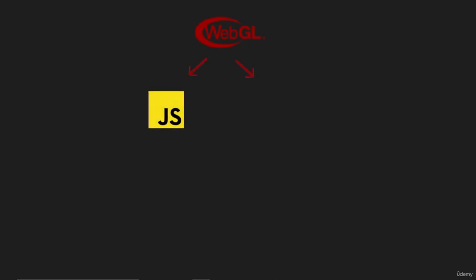WebGL is written in two languages. The first language is JavaScript, which is responsible for controlling the drawn model — moving it left or right or rotating it — and JavaScript code is executed inside the CPU. The second language is OpenGL GLSL Shading Language, which has two functions: to put each point in its position and to give each point a specific color. This is accomplished using the Vertex Shader and the Fragment Shader, and this code is executed inside the GPU.